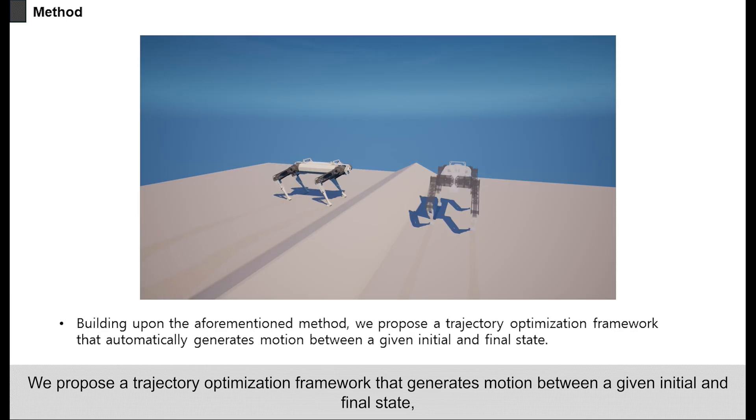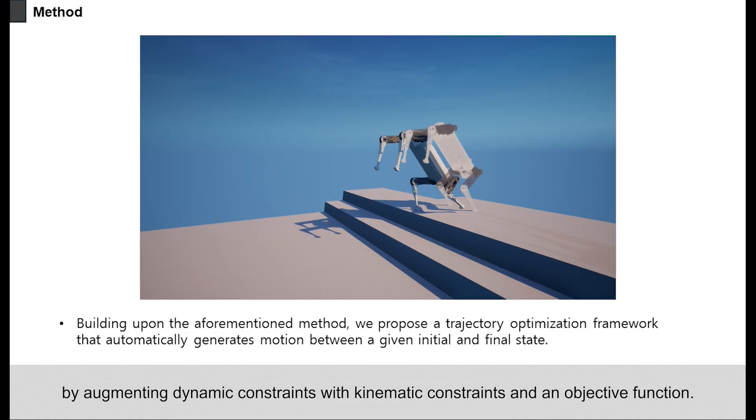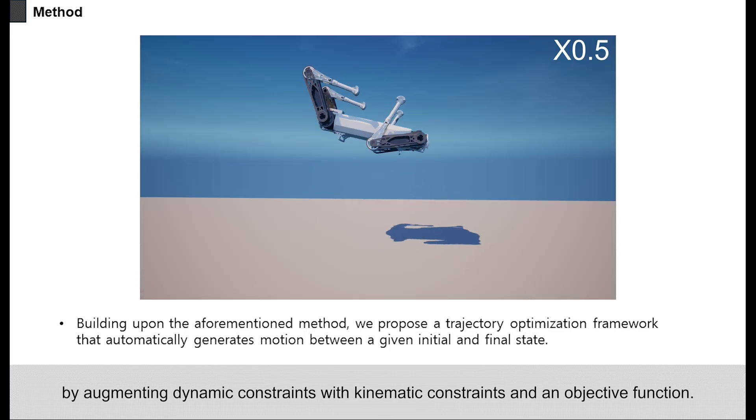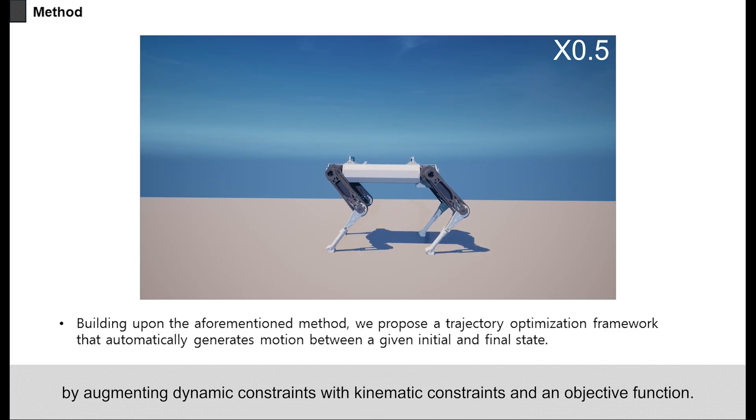We propose a trajectory optimization framework that generates motion between a given initial and final state by augmenting dynamic constraints with kinematic constraints and an objective function.